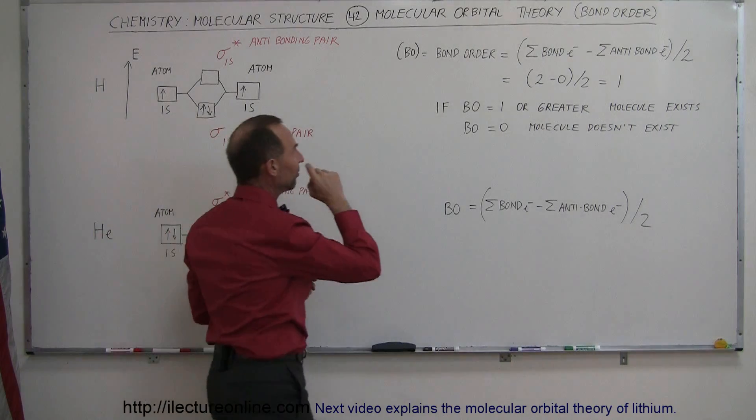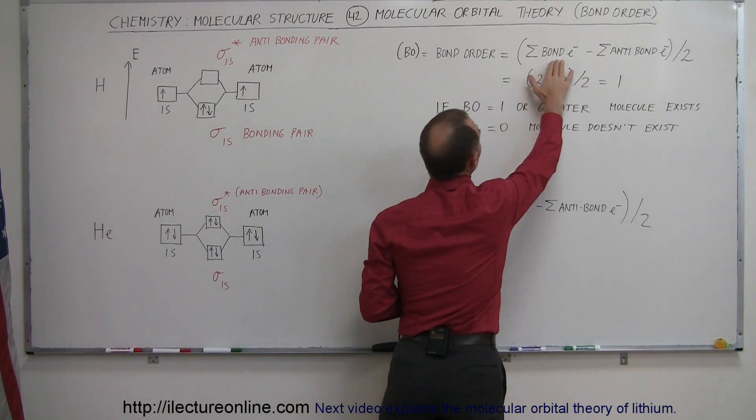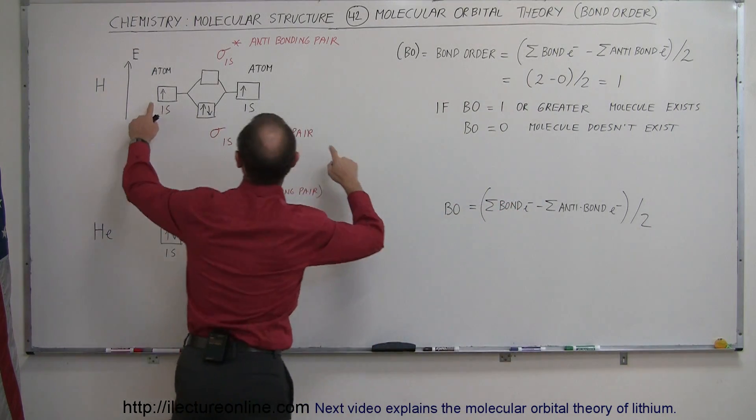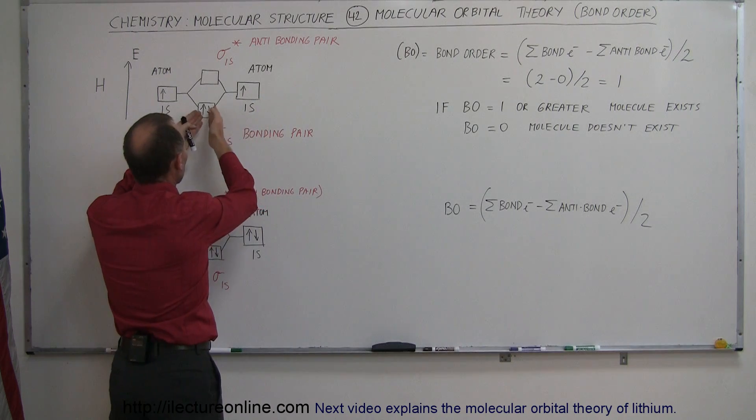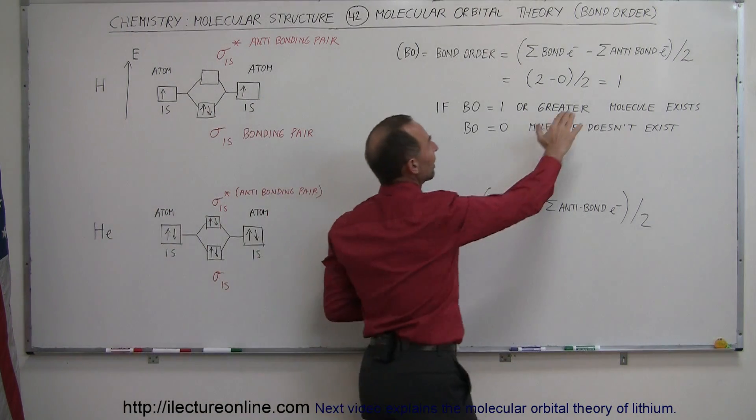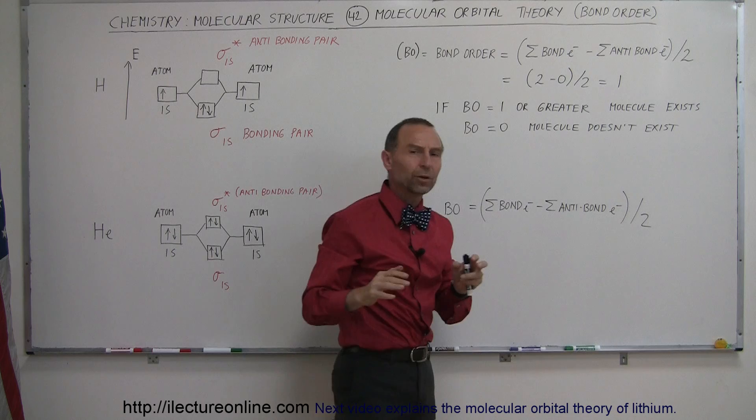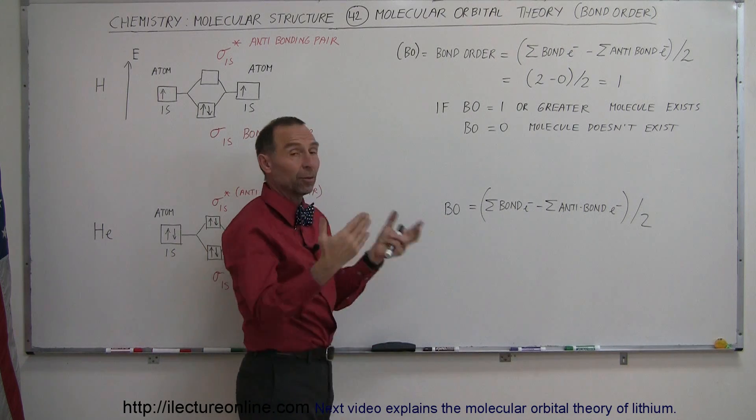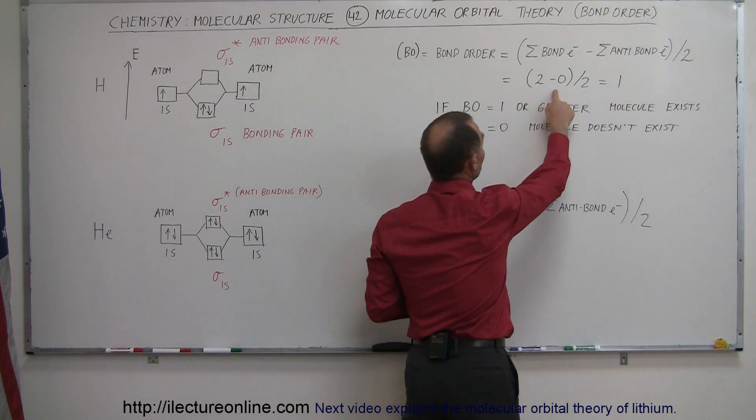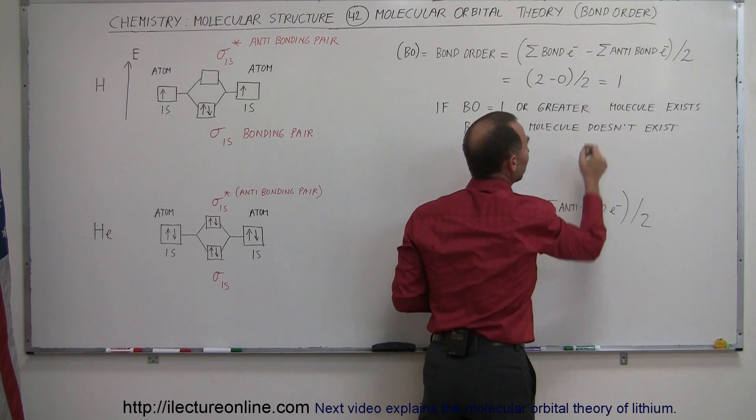So the bond order is equal to the sum of all the bond electrons. In this case with hydrogen, there are two bond electrons, minus the anti-bond electrons. Since we don't have any other electrons yet, that number would be zero. 2 minus 0 is 2, divided by 2 equals 1.